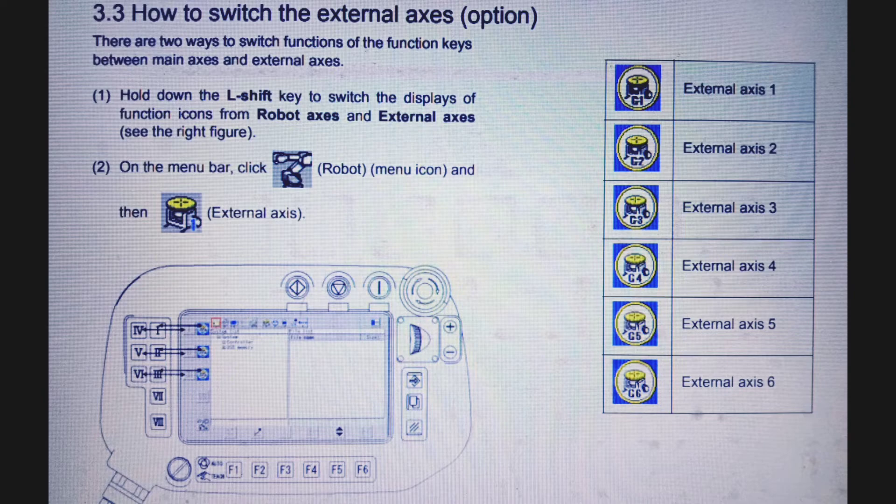There are two ways to switch functions of the function keys between main axis and external axis. First one: hold down the L shift key to switch the displays of function icons from robot axis to external axis.